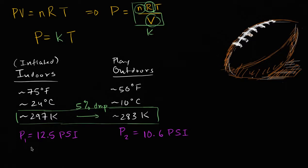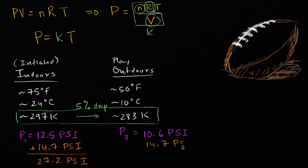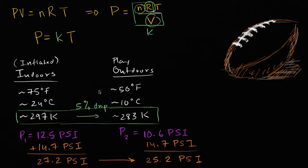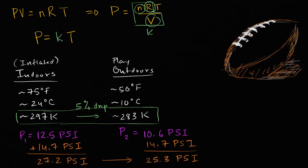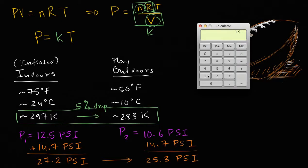Outside the ball there is pressure — standard atmospheric pressure. The pressure is caused by the weight of the atmosphere. To figure out absolute pressure and the correct percentage change, you need to add the inside gauge pressure to the outside atmospheric pressure. I don't know the exact readings for that day in New England, but standard atmospheric pressure is 14.7 PSI. Adding that to 12.5 PSI gives us 27.2 PSI absolute indoors.